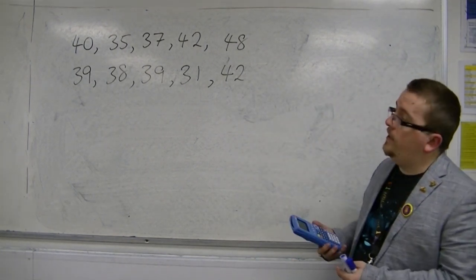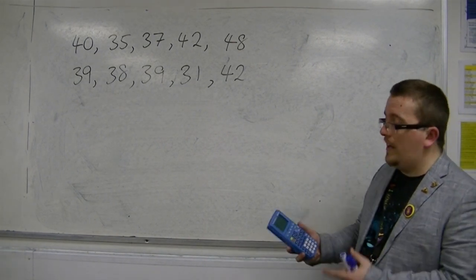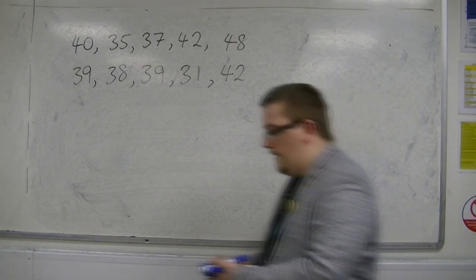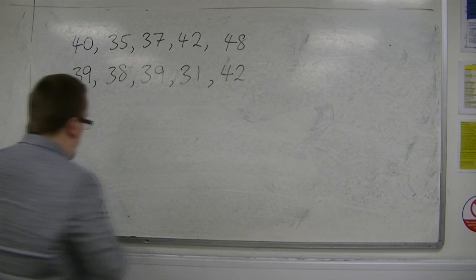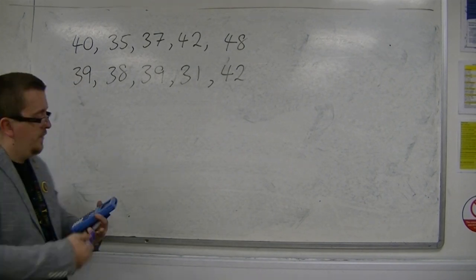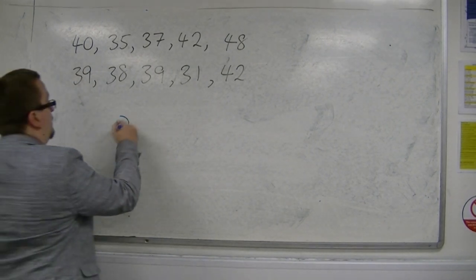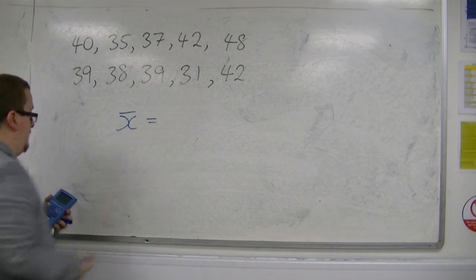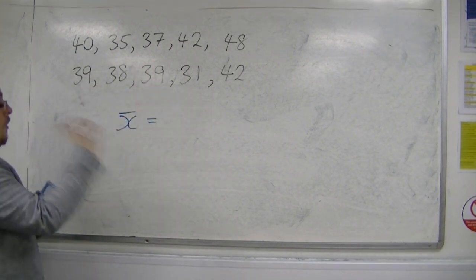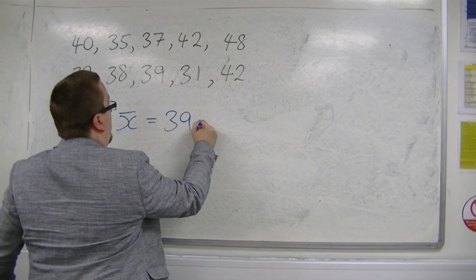I can plug these straight into the calculator and use the one variable stats function to find the mean. An unbiased estimator for the mean is just the mean of this data, and I get 39.1.